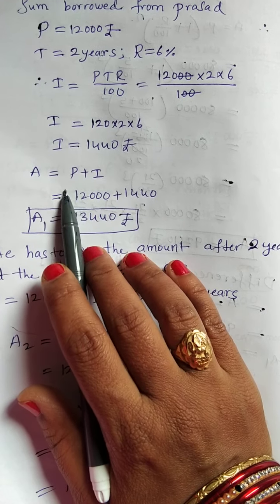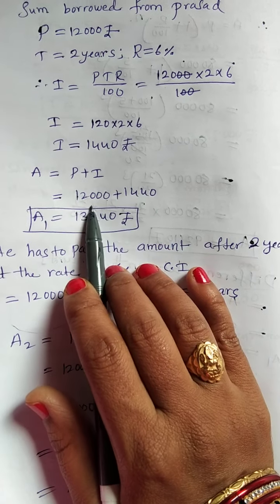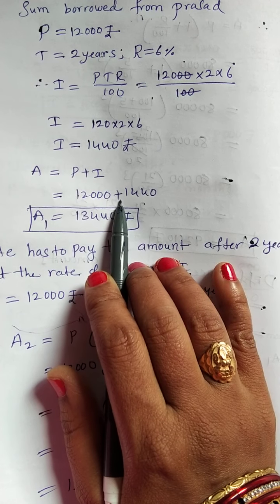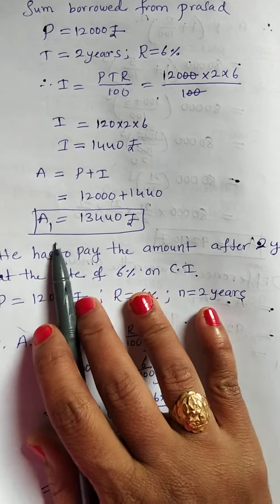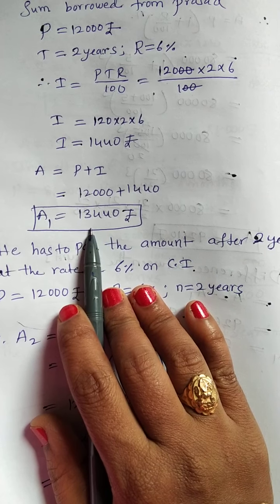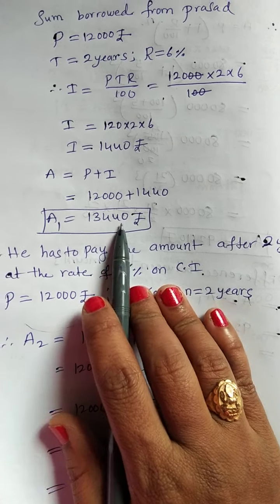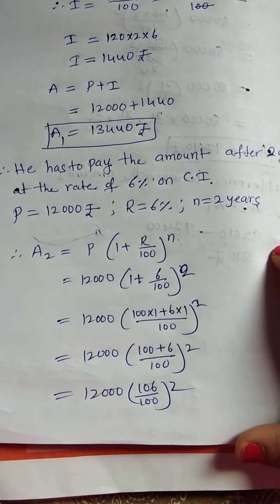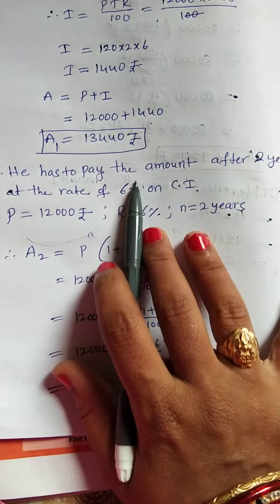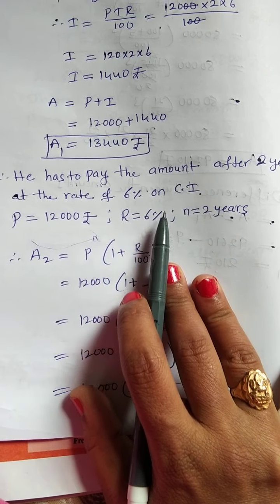Then, A is equal to P plus I. P is 12,000 plus I is 1,440. Then, A1 is equal to 13,440. If you add the two amounts, principal amount and I, it will come.